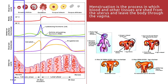Menstruation is the elimination of the thickened lining of the uterus, or the endometrium, from the body through the vagina. Menstrual fluid contains blood, cells from the lining of the uterus, and mucus. The average length of the menstrual period is between 3 days and up to 1 week.